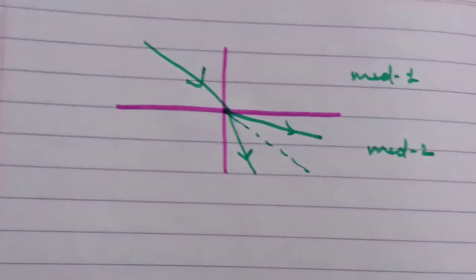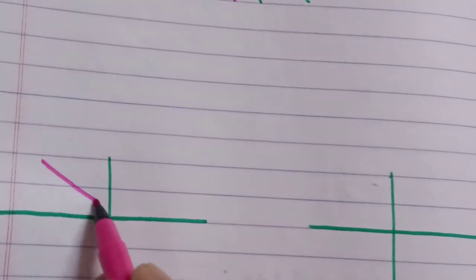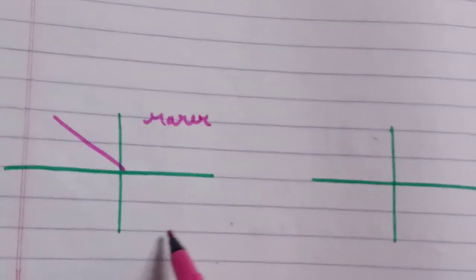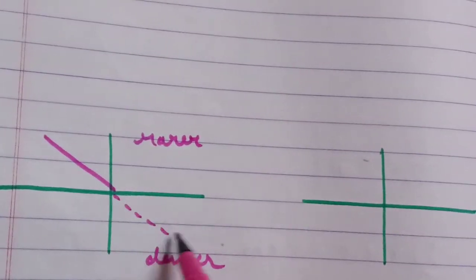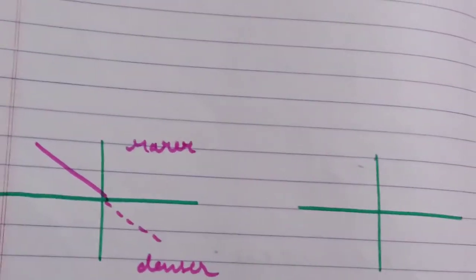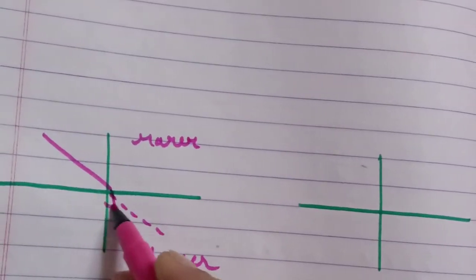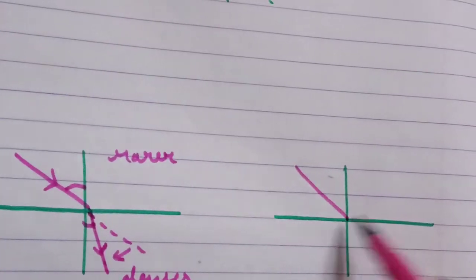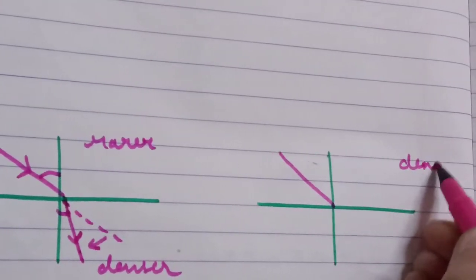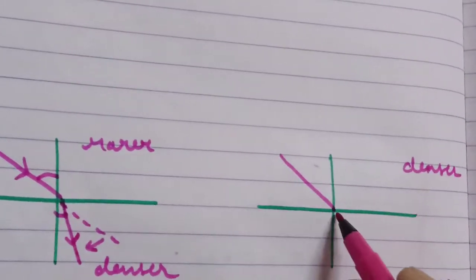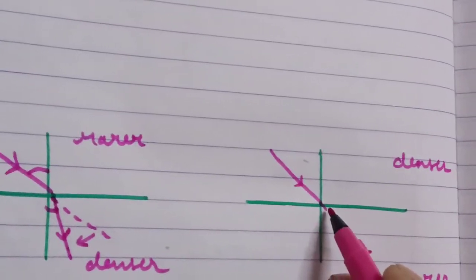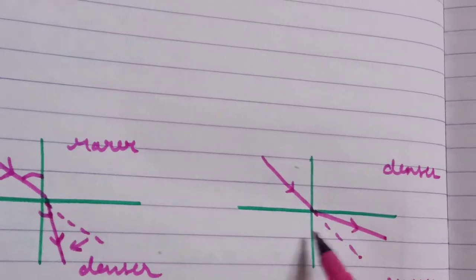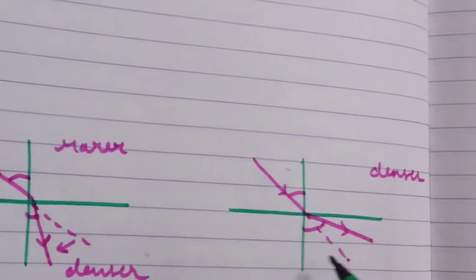Let's see the rules. When light goes from rarer to denser, it will bend towards the normal. And if light goes from denser to rarer, then it will bend away from normal.